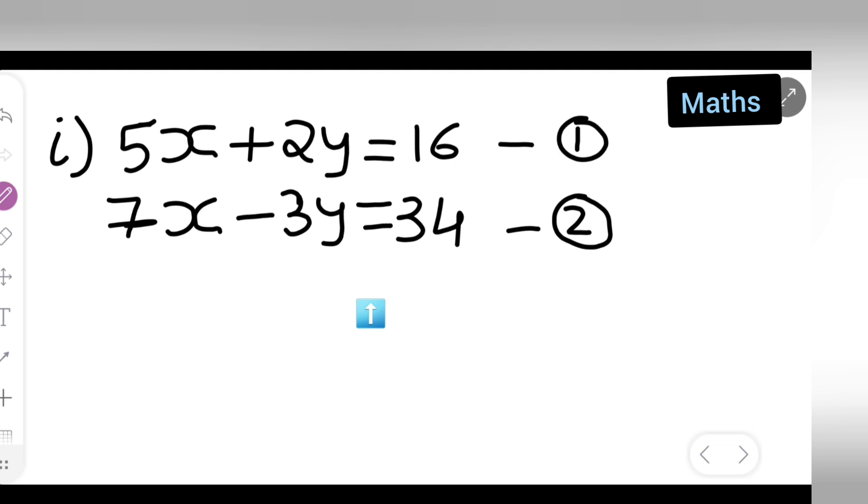Now what we are going to do is multiply these. Now multiply the first equation with 7 and the other one by 5. Now we are taking only x coefficient of x. This 7 I will multiply here and this 5 I am going to multiply here.